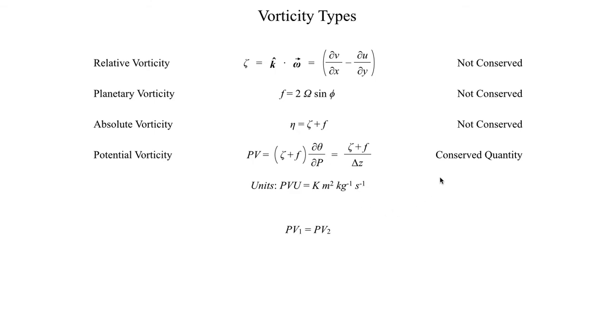And if we invoke this conservation quantity, that means that the potential vorticity at some previous point in time must be equal to the potential vorticity at some later point in time. So if we have a potential vorticity at say some time one, then that must be equal to the potential vorticity at some later time two. And if we invoke that conservation principle, then we get that the relative vorticity at time one plus the planetary vorticity, that's just the Coriolis parameter at time one,